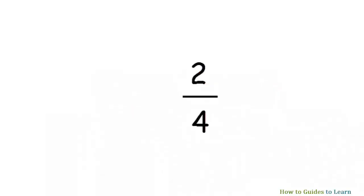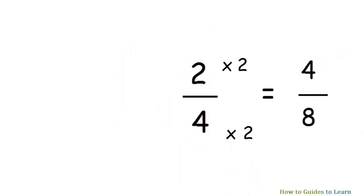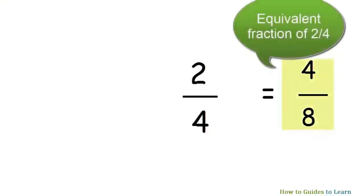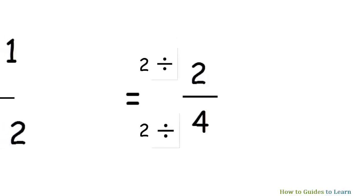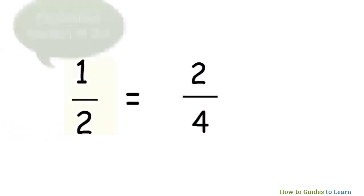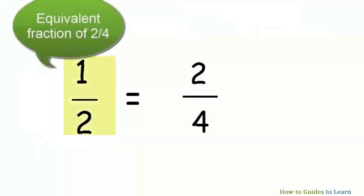Find the equivalent fraction of two by four. When we multiply both the numerator and denominator of two by four by two, we get four by eight. Four by eight is an equivalent fraction of two by four. When we divide both the numerator and denominator of two by four by two, we get one by two. One by two is an equivalent fraction of two by four.